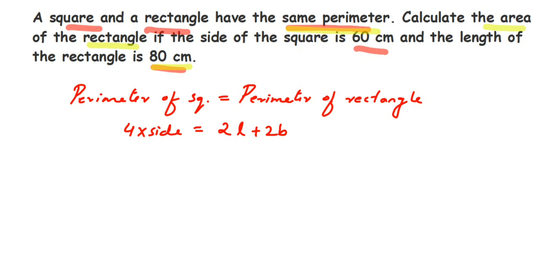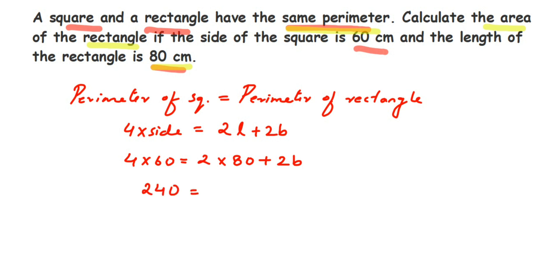Now we substitute the known values. The side is 60 centimeters, so we have 4 × 60 = 2 × 80 + 2b, since we don't know the breadth. So 4 × 60 = 240, and 2 × 80 = 160, giving us 240 = 160 + 2b.